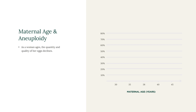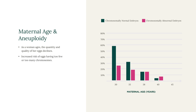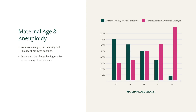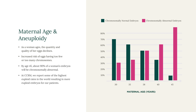As a woman ages, the quantity and quality of her eggs declines, and she has an increased risk of having eggs with too few or too many chromosomes. This means her chances of creating an aneuploid embryo also increases. At CCRM, we report some of the highest euploid rates in the world, resulting in more euploid embryos for our patients. About half of the embryos from a woman who is 38 years old will contain chromosome abnormalities. As she gets older, this number will continue to increase, and by age 45, about 90% of a woman's embryos will be chromosomally abnormal.